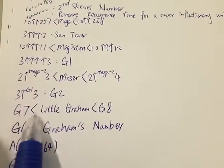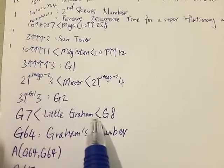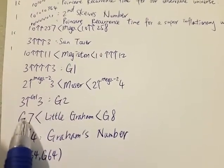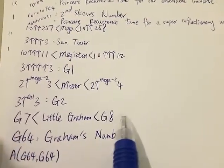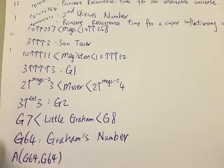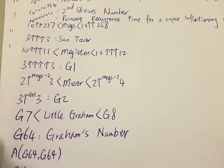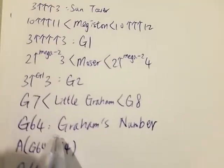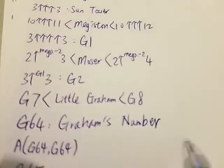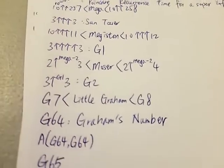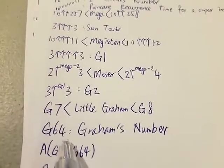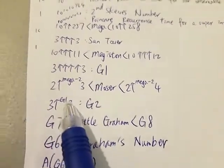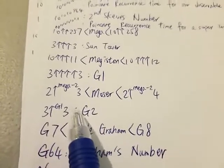Next we have the Little Graham, which is between G7 and G8 of Graham's number. Next we have Graham's number, which is G64 — that is, 3 with G63 up-arrows 3.